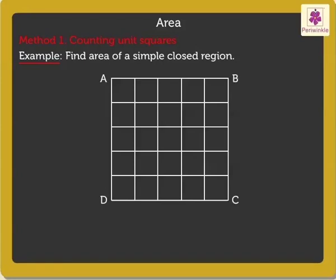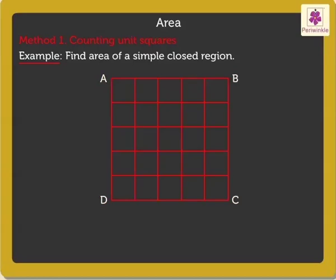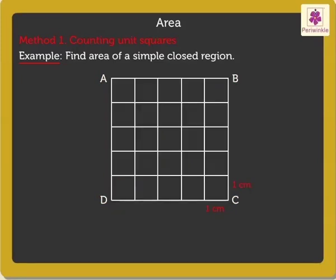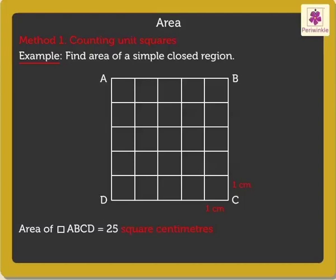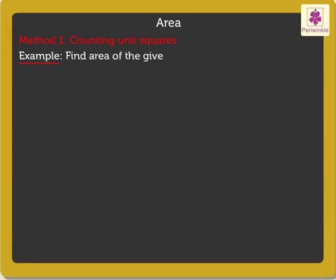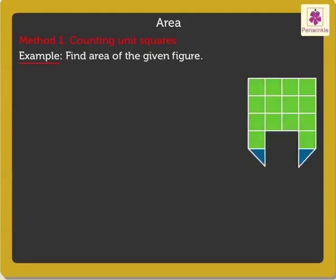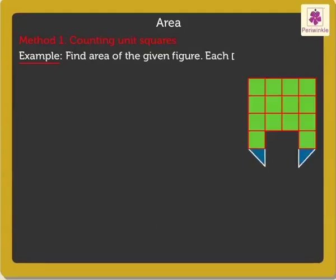Look at the square ABCD. It is divided into twenty-five equal squares of side one centimeter each. Thus we say that the area of square ABCD is equal to twenty-five square centimeters. Square centimeters can also be written as sq cm in short.